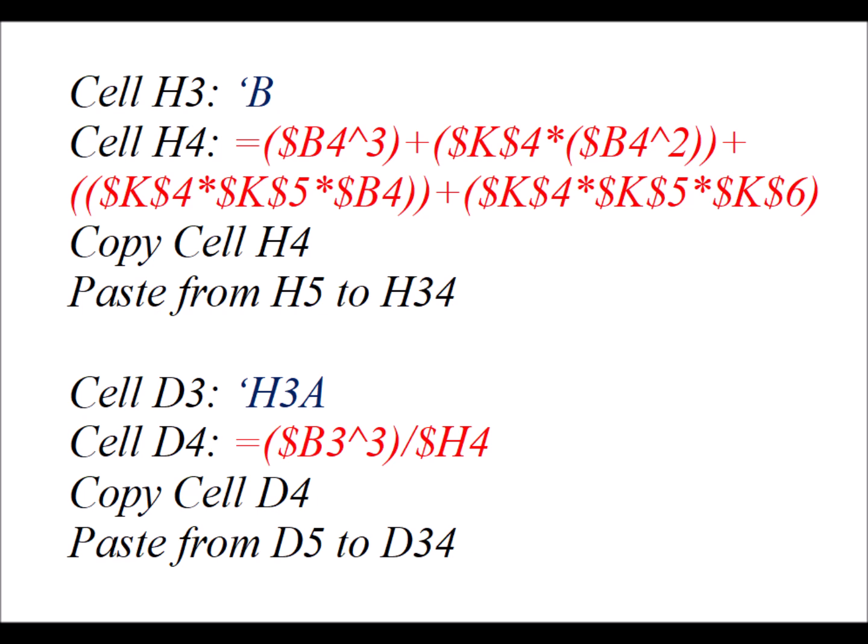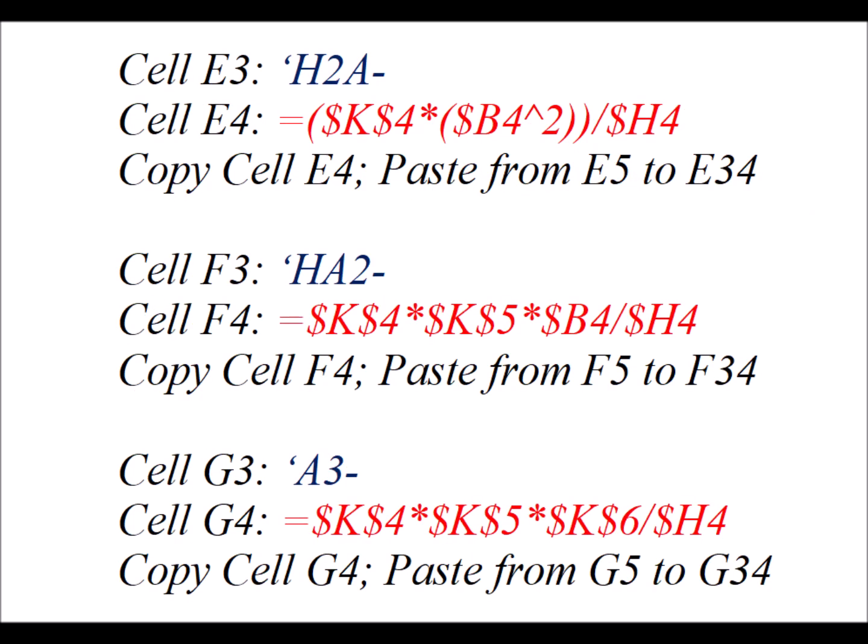In cell D3, we put the label H3A. So this is the triple protonated form. In cell D4, we have the formula. We copy cell D4 and we paste it from D5 to D34. In cell E3, we put the label H2A minus. So this is the conjugate base of phosphoric acid. In cell E4, we put the formula. Then we copy cell E4 and paste it from E5 to E34.